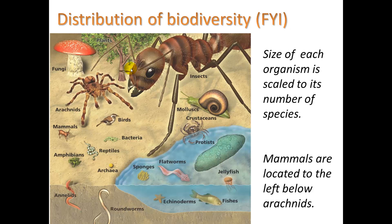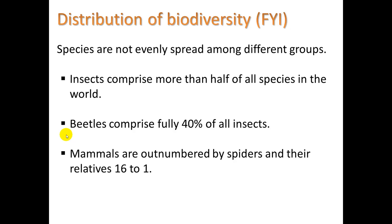What is the variety of life on the planet? Planet-wide, there are many, many insects. This diagram shows the number of species within each category by size — insects is the biggest, meaning the most species. Arachnids are also large, followed by protists such as algae, and many types of roundworms and annelids. Mammals represent a relatively small number of species worldwide. Insects comprise more than half of all species in the world; beetles make up fully 40% of all insects; and mammals are outnumbered by spiders and their relatives 16 to 1.